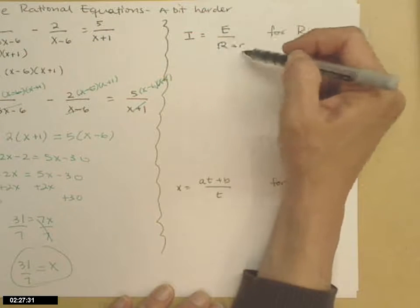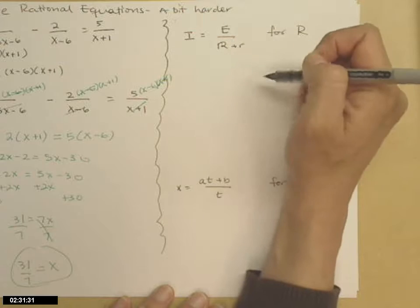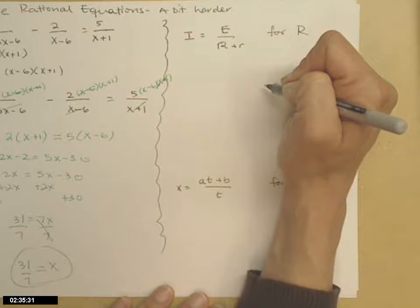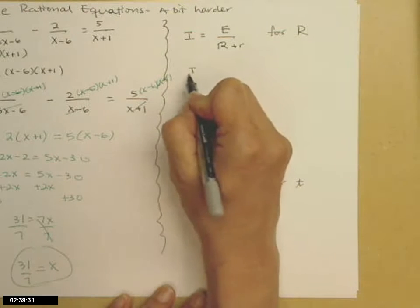I do that either, in this case I have one fraction equaling one fraction, so I can just cross multiply. Or you can still multiply both sides by the LCD, capital R plus little r. Either way, it gets you to the same spot, which is here.